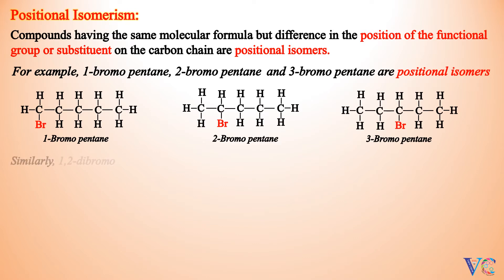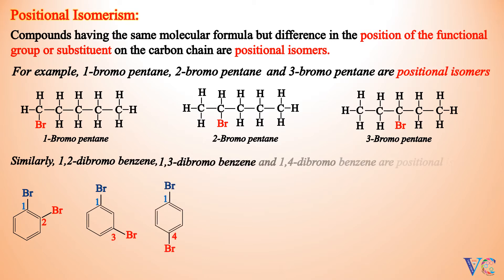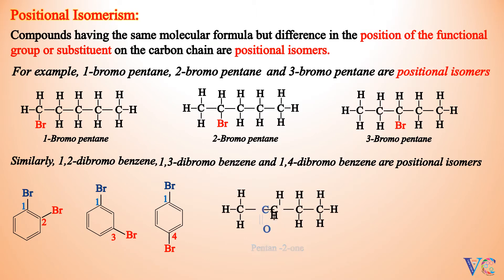Similarly, 1,2-Dibromopentane, 1,3-Dibromopentane, and 1,4-Dibromopentane are positional isomers. Pentane-2-Bromopentane and Pentane-3-Bromopentane are also positional isomers.